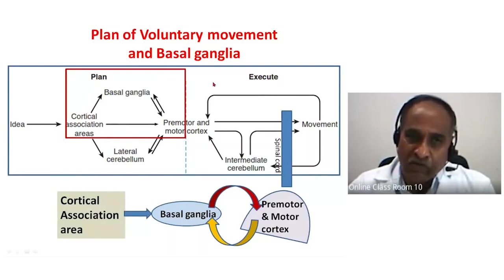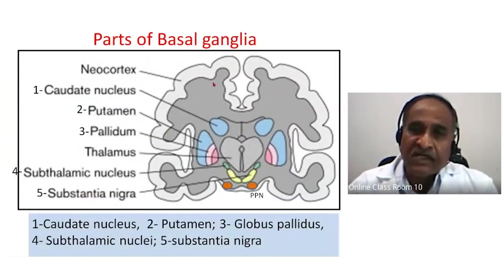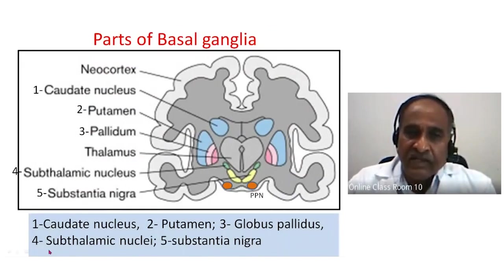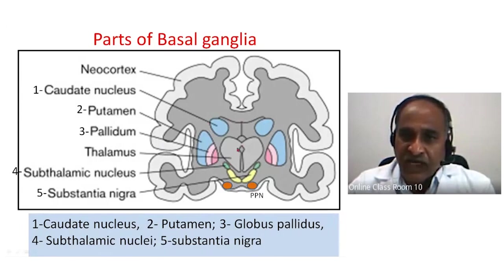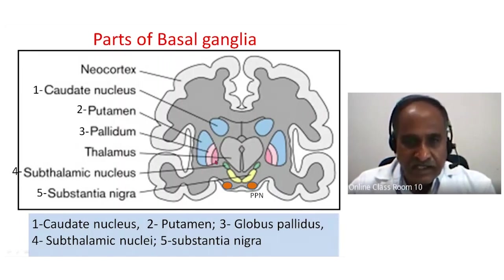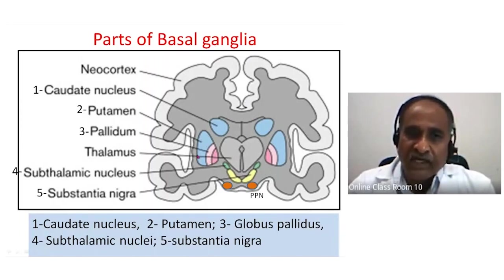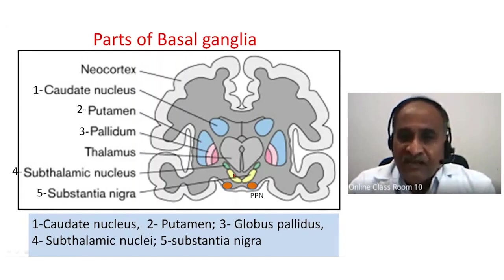These are the parts of the basal ganglia. I have named five parts: the caudate nucleus, the putamen — together these two are known as the striatum — then the globus pallidus externa and globus pallidus interna. The globus pallidus interna, externa, and putamen together are known as the lentiform nucleus.